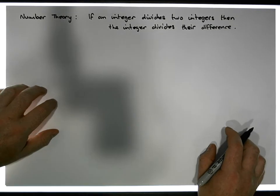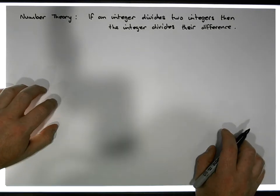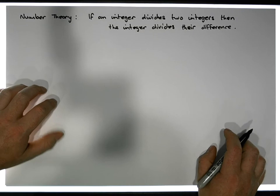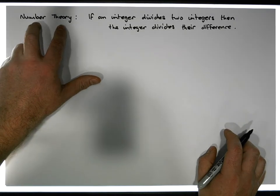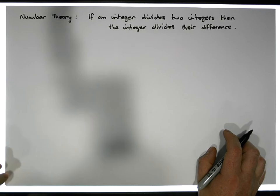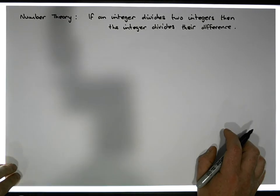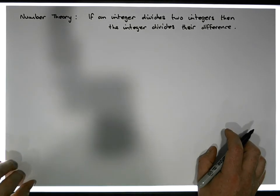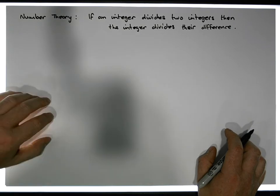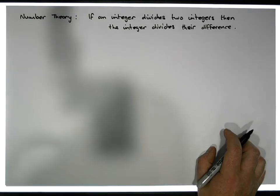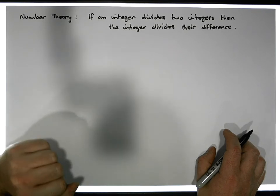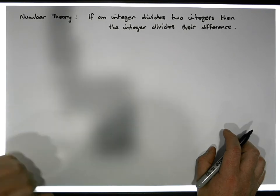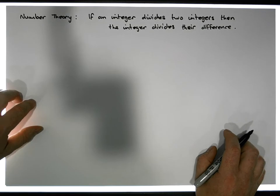Hi guys, this is Jonathan Lambert with the Mathematics Development and Support Service at the National College of Ireland. This is another video in our series of videos in relation to number theory. It's going to be a really important video because we're going to use this video later on when we try to present Euclid's proof of the infinitude of the prime numbers. This particular characteristic of integers is going to be relied upon when we prove later on that there's an infinite number of prime numbers.